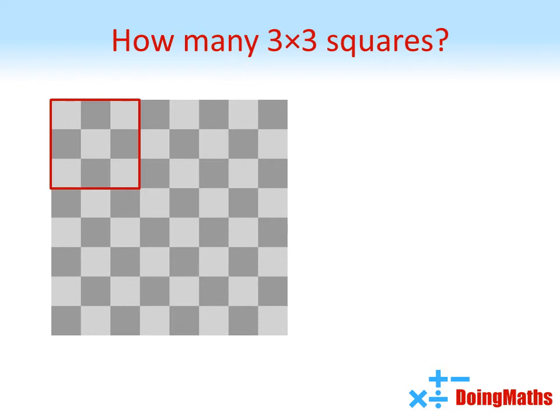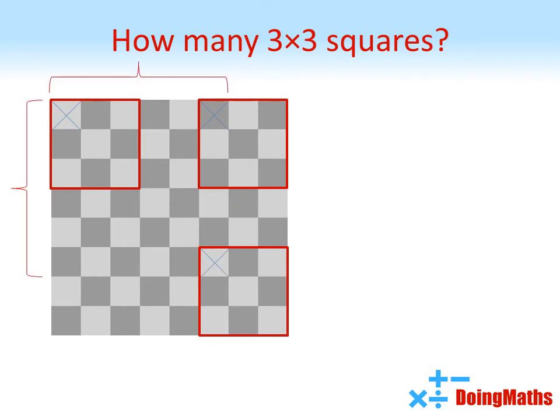We can do the same thing for the 3x3 squares. This time the cross must be in the first 6 columns and the first 6 rows. Hence there are 6 times 6 equals 36 3x3 squares on the board.